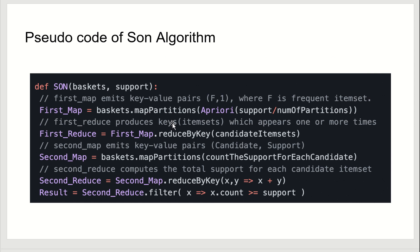Coming to the pseudocode of the SON algorithm, the input is the baskets and the support threshold. The sequence of steps involves the first map function, then the first reduce function, then the second map function, and then the second reduce function. The reduce function is performed on the count and support of the output.